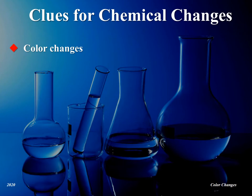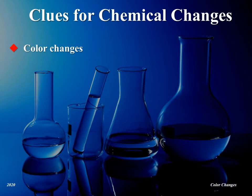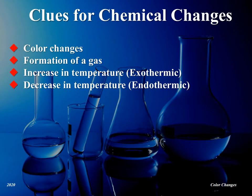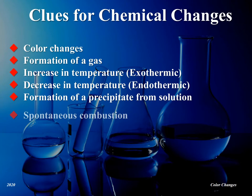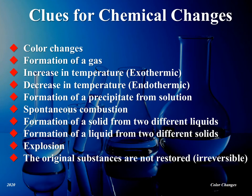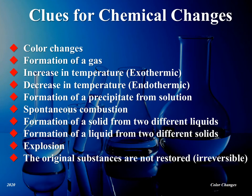There are numerous clues to chemical changes: changes in color, the formation of a gas, an increase in temperature known as an exothermic reaction, a decrease in temperature known as an endothermic reaction, the formation of a precipitate from solution, spontaneous combustion, formation of a solid from two different liquids, formation of a liquid from two different solids, an explosion, and the original substances are not restored, so the reaction is not reversible. Now let us demonstrate a chemical change.